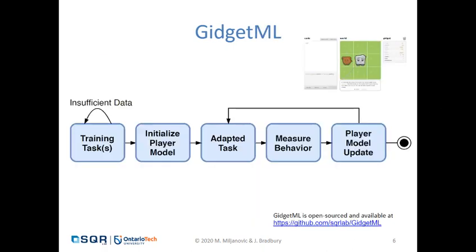In our version of Gidget, called GidgetML, we perform adaptation by collecting data from gameplay performance. Some of the levels from the original Gidget are used as training tasks to collect data and initialize a player model. Once we have a model that has assessed the player's level of competency, we begin to adapt the tasks based on this model. We continuously measure behavior by collecting more data about task performance and use that to update the player model, performing a loop where each successive task is adapted until they've reached the end of the game.